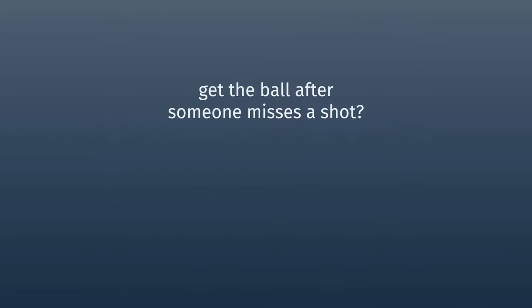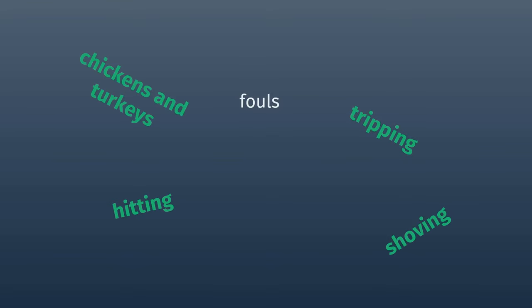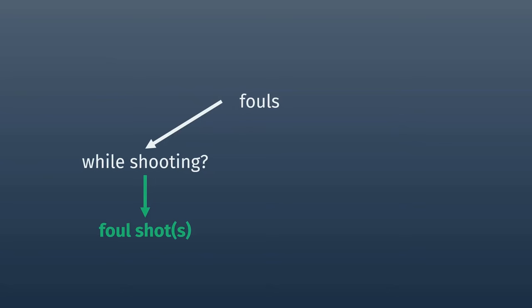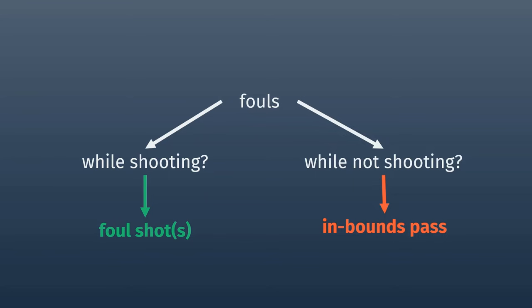Someone misses a shot? Grab the ball — that's called a rebound. The exact rules about what is a foul and what isn't change from league to league, but typically you can't shove someone, hit them, or trip them. If one of these violations occurs, the referees will call a foul. If the player was shooting when the foul occurred, they'll get to shoot free throws. If the player wasn't shooting when they got fouled, their team will get to pass the ball inbounds and continue playing. If one team fouls the other a certain number of times — in college it's seven times in a half — the team getting fouled will get to shoot free throws even if they weren't shooting when fouled.